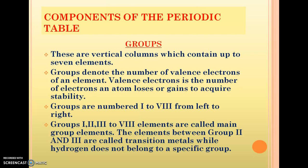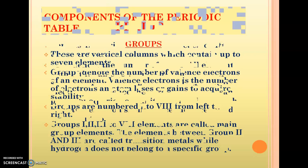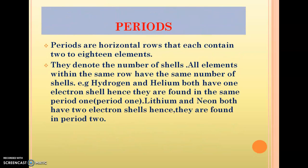From left to right we have the first group, second, up to the eighth. Group one, group two, and group three to group eight elements are called main group elements. The elements between group two and group three are called transition metals, while hydrogen does not belong to a specific group.